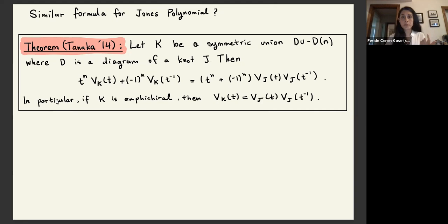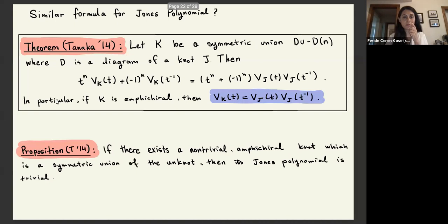And even further, when we assume K is amphichiral, this formula becomes quite simplified as follows. And because we know that for the amphichiral links, the Jones polynomial has palindromic coefficients. So Jones polynomial is actually a very good way to obstruct amphichirality.